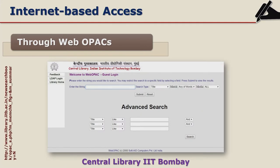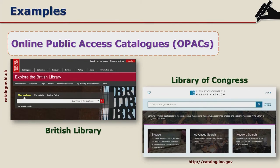Through various web OPACs you can get information on availability of materials — books, theses, and dissertations available in libraries. All university libraries and institutes like IITs have their own web OPACs. Catalogues of the British Library and other world libraries like the Library of Congress also have web OPACs. This is a snapshot of the web OPAC of IIT Bombay Library, along with web OPACs of the British Library and Library of Congress.